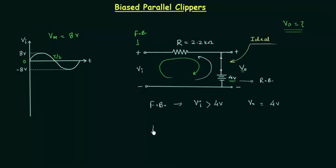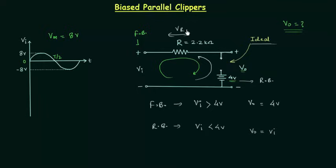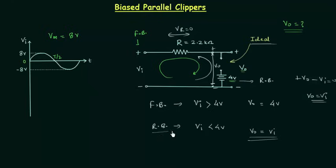The next case is when the diode is reverse biased, which happens when the input voltage is smaller than 4 volts. The output voltage Vo is simply equal to the input voltage Vi for this condition. The diode remains open-circuited, so there is no current in the circuit and the voltage drop across the resistance is zero. Applying Kirchhoff's voltage law: Vo minus Vi equals 0, so Vo equals Vi when the diode is reverse biased.